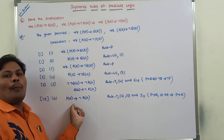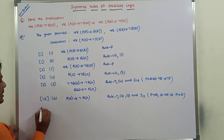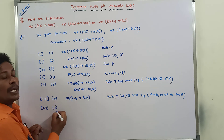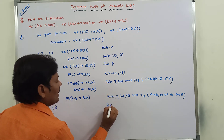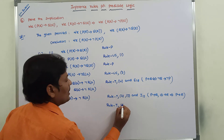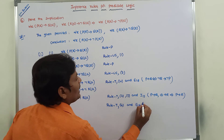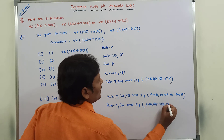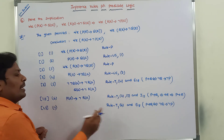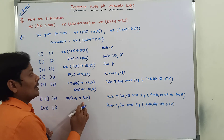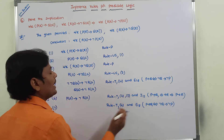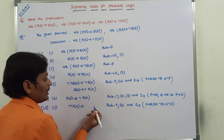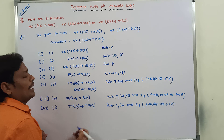Now we apply the contrapositive step again on the sixth step, using Rule T and E18. In E18: p → q is logically equivalent to ¬q → ¬p. Here p is p(a) and q is ¬r(a). So we get ¬(¬r(a)) → ¬p(a), which is the seventh step.